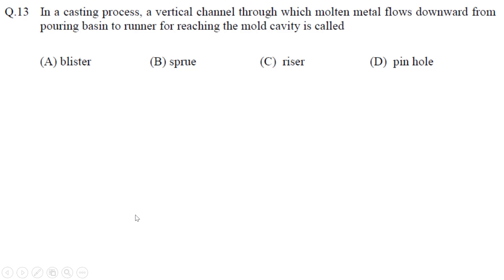First question is: In a casting process, a vertical channel through which molten metal flows downward from pouring basin to runner for reaching the mold cavity is called? It is asking about, let's see, this is the pouring basin, right?